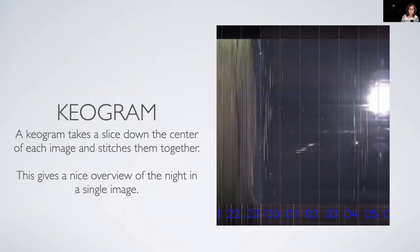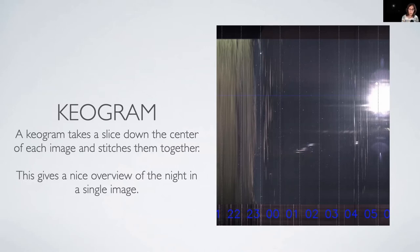Keograms: you take each image from the night, take a slice right down the center, and stitch those slices together. What you get is a view of the night from the beginning on the left to dawn on the right, showing how the sky looked along the zenith and meridian over the course of the night. For example, on this picture you can see it was cloudy at the beginning of the night, then it cleared up, and then the moon came up. It's an after-the-fact thing — you don't get a keogram until you have the whole night's images.